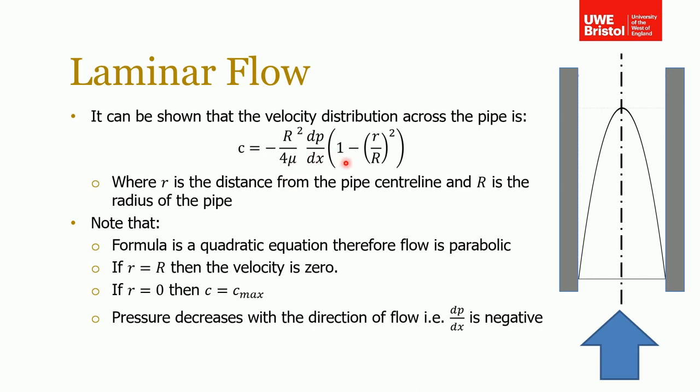The same way that heat flows from high temperature to low temperature, fluid will flow from high pressure to low pressure. Otherwise you'd end up with a negative velocity. So that minus sign is in there because dp/dx would be negative because the change in pressure with x is negative.